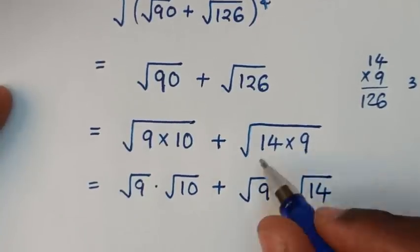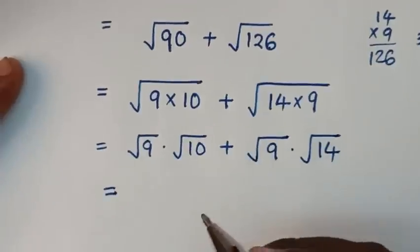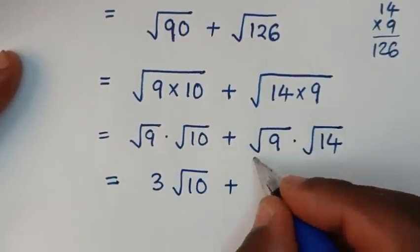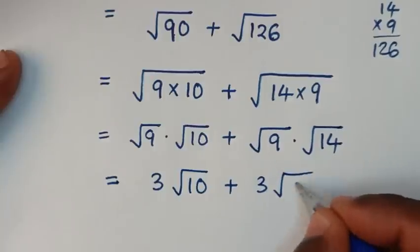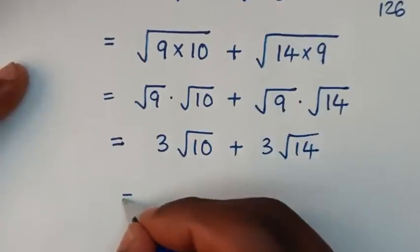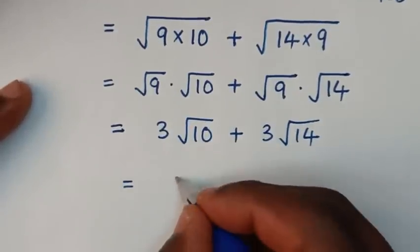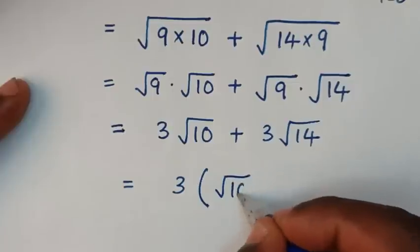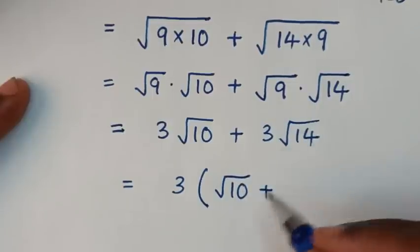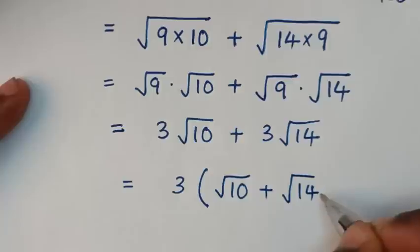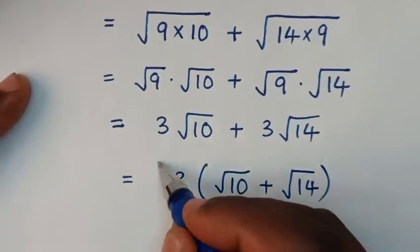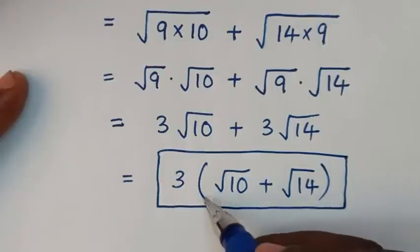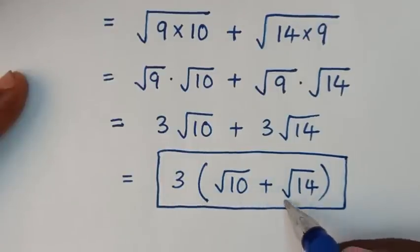Square root of 9 is 3, times square root of 10, plus square root of 9 is 3, times square root of 14. Then it will be equal to — we take 3 out of the bracket — so this divided by 3 is square root of 10, plus this divided by 3 is square root of 14. So this is the simplified form of our problem: 3 brackets square root of 10 plus square root of 14 bracket.